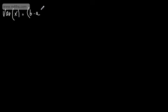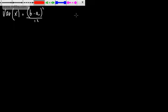In this video, we're going to show that Var(X) equals (b minus a) all squared over 12 for the continuous uniform distribution, also known as the rectangular distribution.